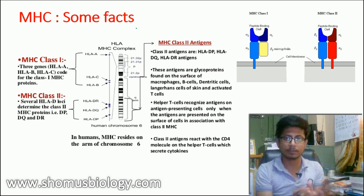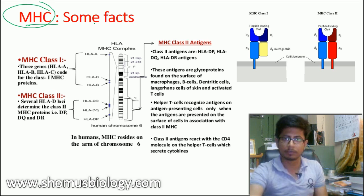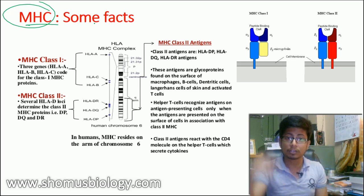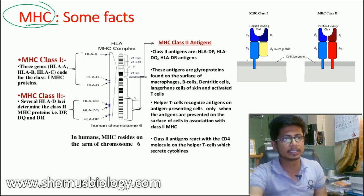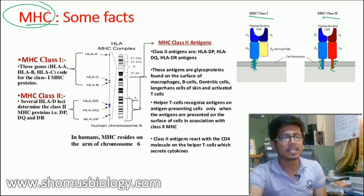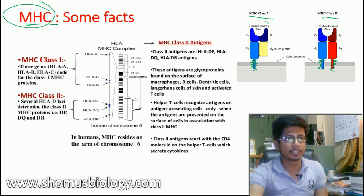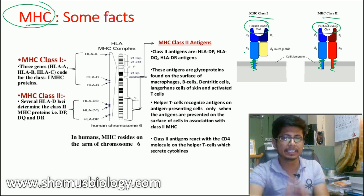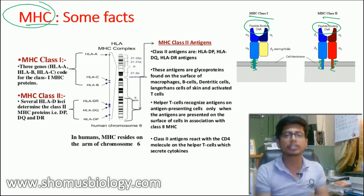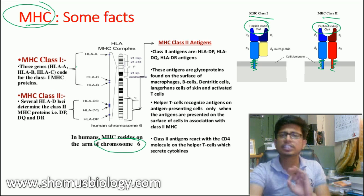Now let's look at the structure of this complex. MHC molecules are protein chains present on the surface of the membrane — they are membrane-embedded proteins. Both MHC class 1 and class 2 have anchorage in the lipid membrane. MHC class 2 has two such anchorages while MHC class 1 has only one. Both have a specific region known as a peptide binding cleft where the antigen is attached, whether it is a self antigen or a foreign pathogen antigen.